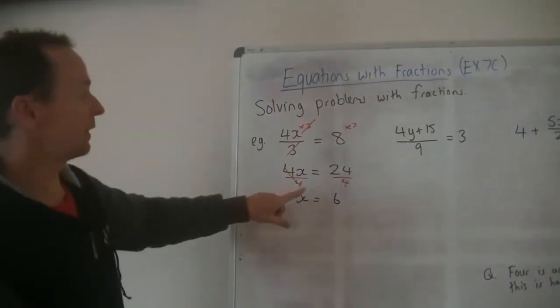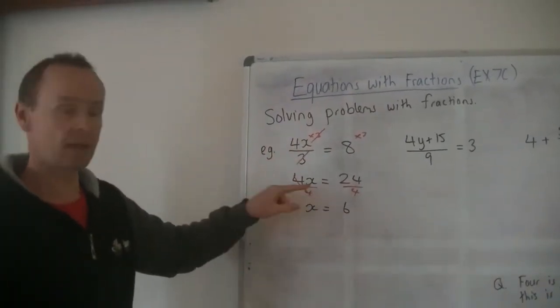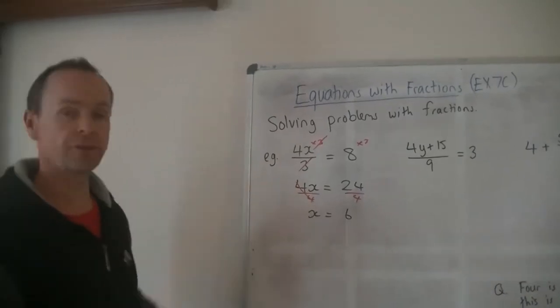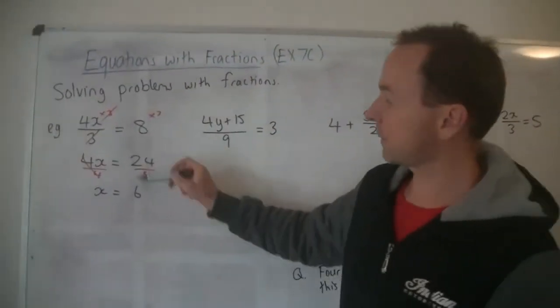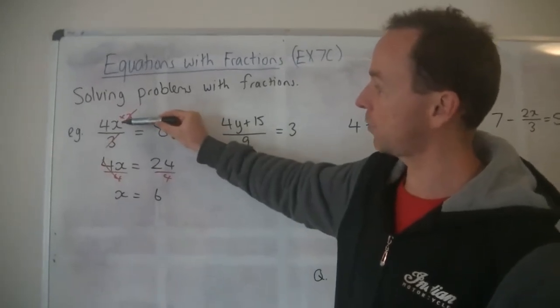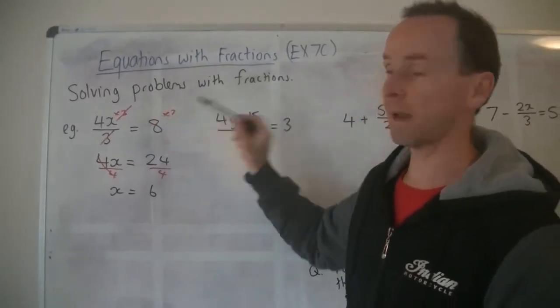And you get x equals 24 divided by 4, which is 6. So like I said, the red that I've drawn there, you do not have to do as workings out, but you need to show each step. And there's your answer. And how would you check your answer? Substitute it back in. 4 times 6 is 24, 24 divided by 3 is 8. Yes, correct.